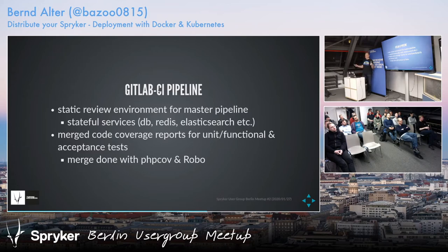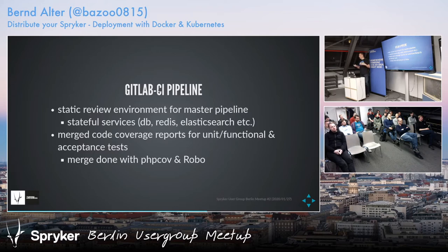After managing to get the code coverage reports, I noticed I had two reports that needed to be merged to get one unified coverage report. For this, I use php-carf and robo — you can use the XML files and then merge them. There's some nice tooling, but it would be too much to explain right now — might be a different talk.